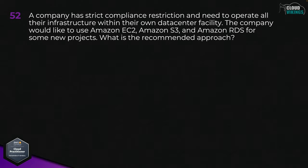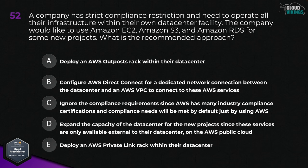Question fifty-two: a company has strict compliance restrictions and needs to operate all their infrastructure within their own data center facility. The company would like to use Amazon EC2, Amazon S3, and Amazon RDS for some new projects. What is the recommended approach? Options are: A, deploy an AWS Outpost Rack within their data center; B, configure AWS Direct Connect; C, ignore the compliance requirements since AWS has many certifications; D, expand capacity of the data center; or E, deploy an AWS Private Link Rack within their data center. The best approach here would be A, deploy an AWS Outpost Rack within their data center.